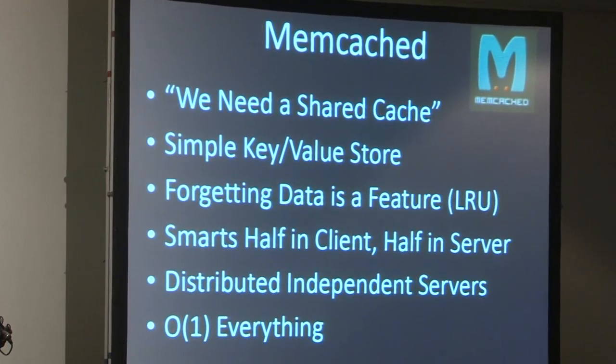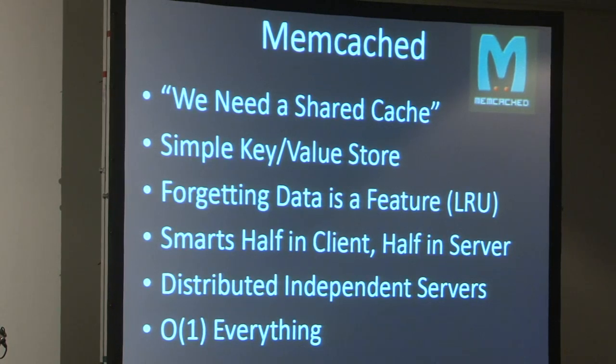We looked around a bit and selected memcached. From their website: it is a simple key-value store — essentially a shared dictionary. Forgetting data is a feature; it has a least-recently-used scheme. The smarts are split between client and server — you can install multiple instances and there's no coordination between those servers, so it's up to the client to ensure the same key goes to the same node. The team who produce memcached don't produce all of the clients, so you have to carefully look at which client you select. In terms of performance it aims to mimic a dictionary — O(1) operations.